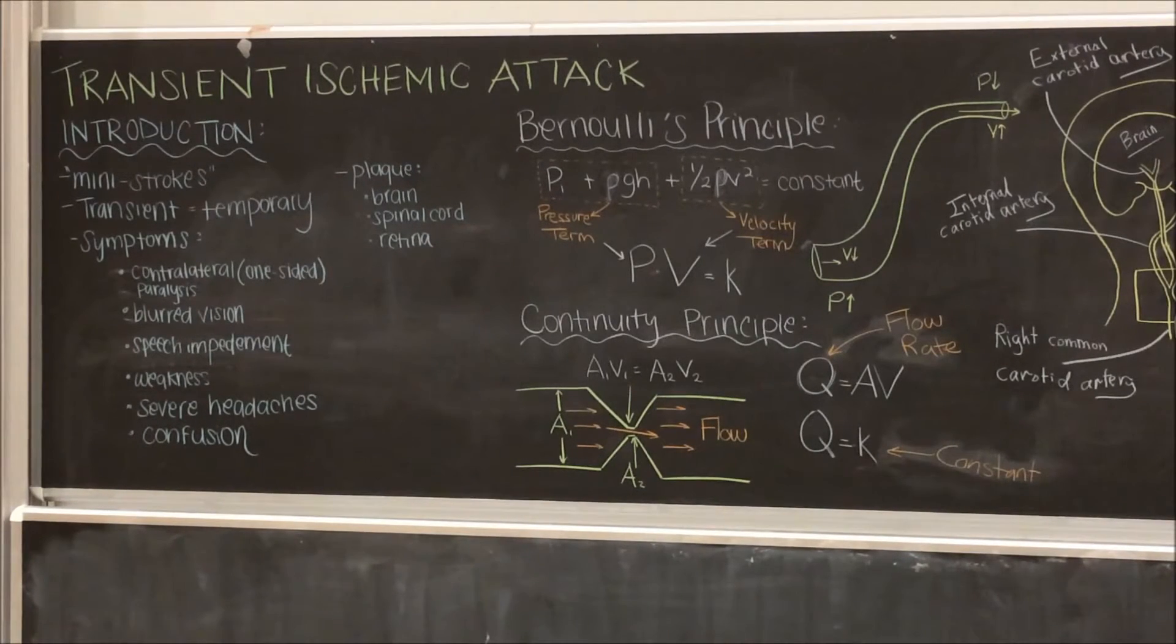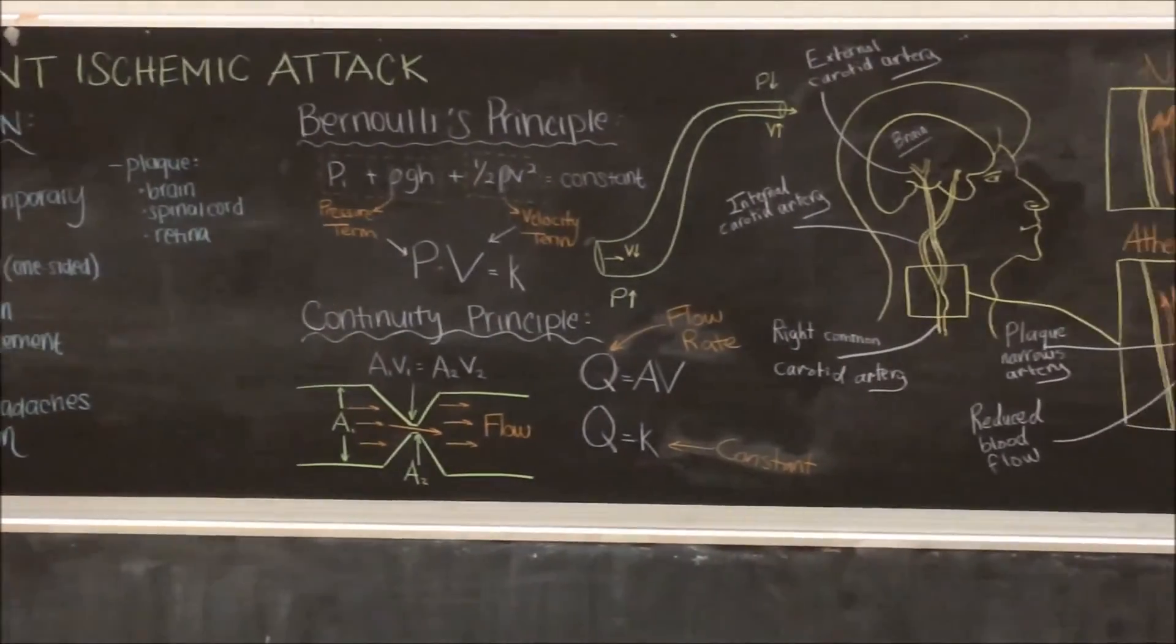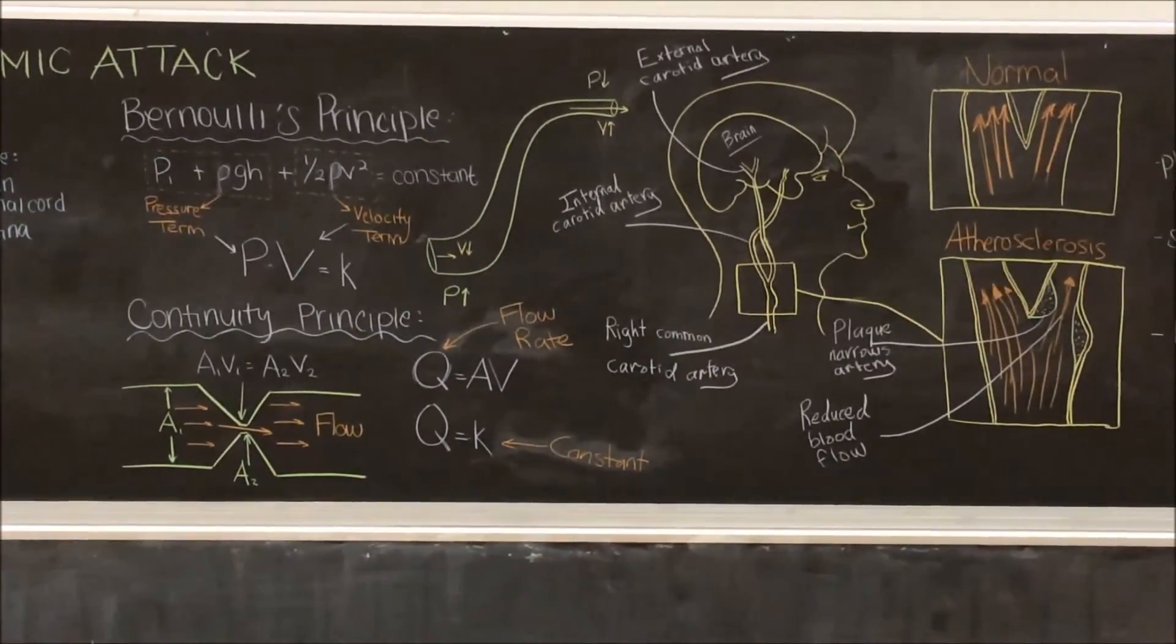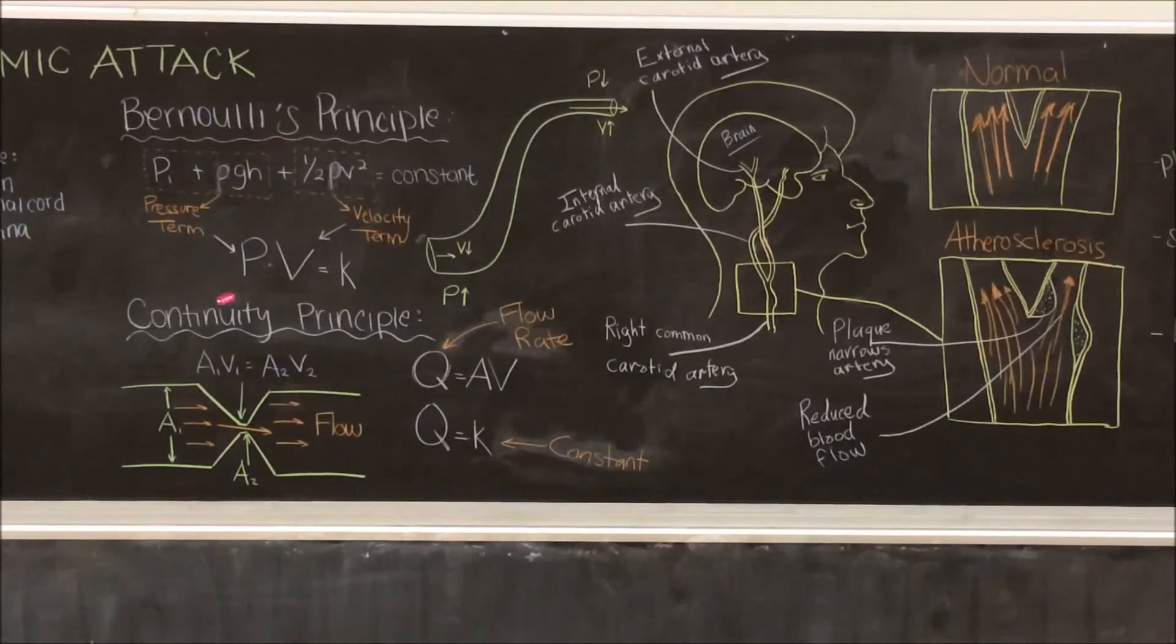Moving on to the physical aspect behind the TIA. There are two important physical phenomena that are regularly applied in the human body circulatory system. The Bernoulli and the continuity principles are restatements of the law of conservation of mass and law of conservation of energy, whereby mass or energy can neither be created nor destroyed, simply converted.